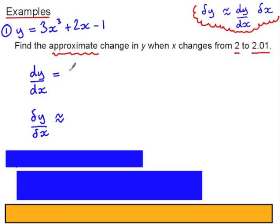dy by dx is 9x squared plus 2, and our change in x, delta x, is equal to 0.01. x is increased from 2 to 2.01. Because this is small,